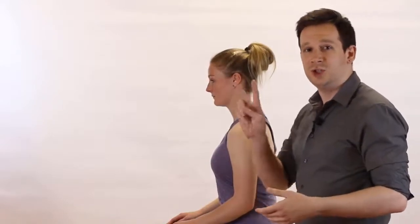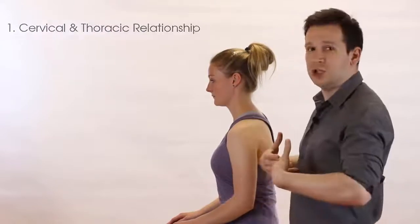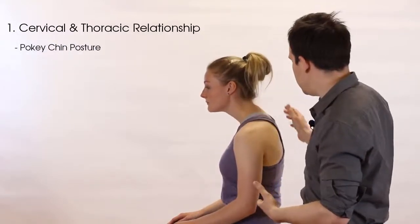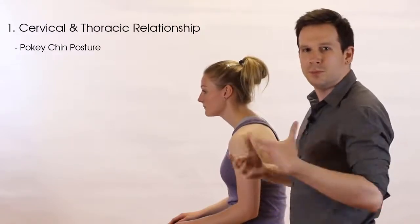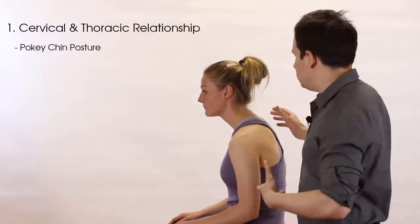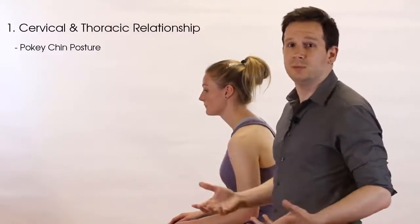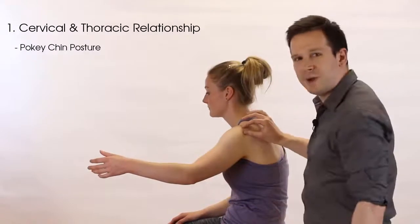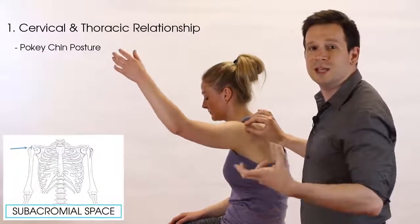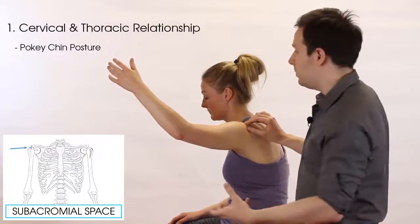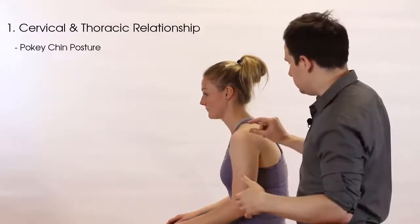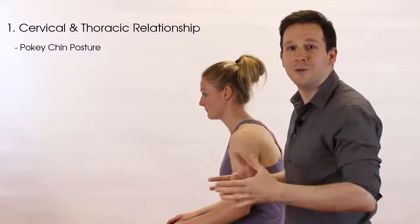Now we're going to look at observation of the shoulder joint in the lateral view. There are two key things here. One is the relationship between the cervical and thoracic spine — the 'pokey chin' posture where the patient slumps forward is a very habitual posture that can be a leading cause of many shoulder problems. In this position, as the patient tries to move their shoulder, there is less space around the subacromial area, so tendons have less room to work. Over time in older patients, tendons become thicker, creating even greater irritation in the already reduced space.